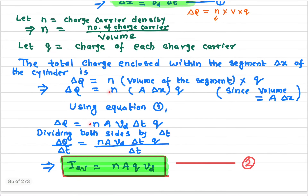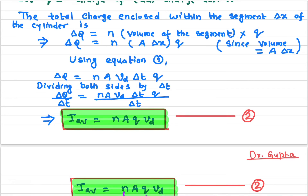So delta Q equals N times A times Vd times delta t times Q. Dividing both sides by delta t: delta Q over delta t equals N times A times Vd times Q, since delta t cancels. The charge divided by time gives the average current. So by definition, the rate of flow of charge is called the current, and it is given by this term: I = nAQVd.